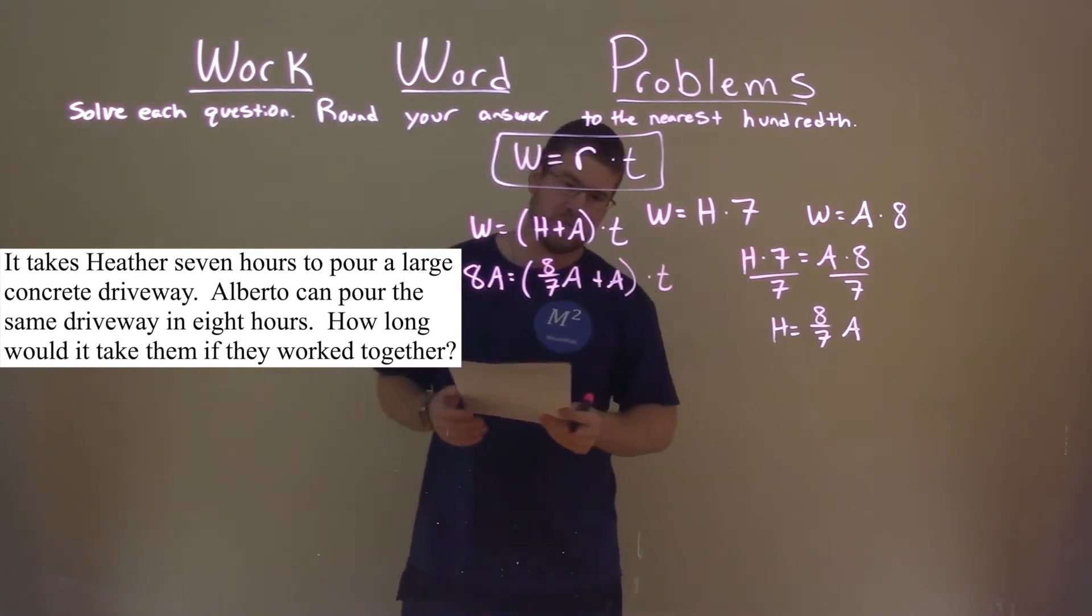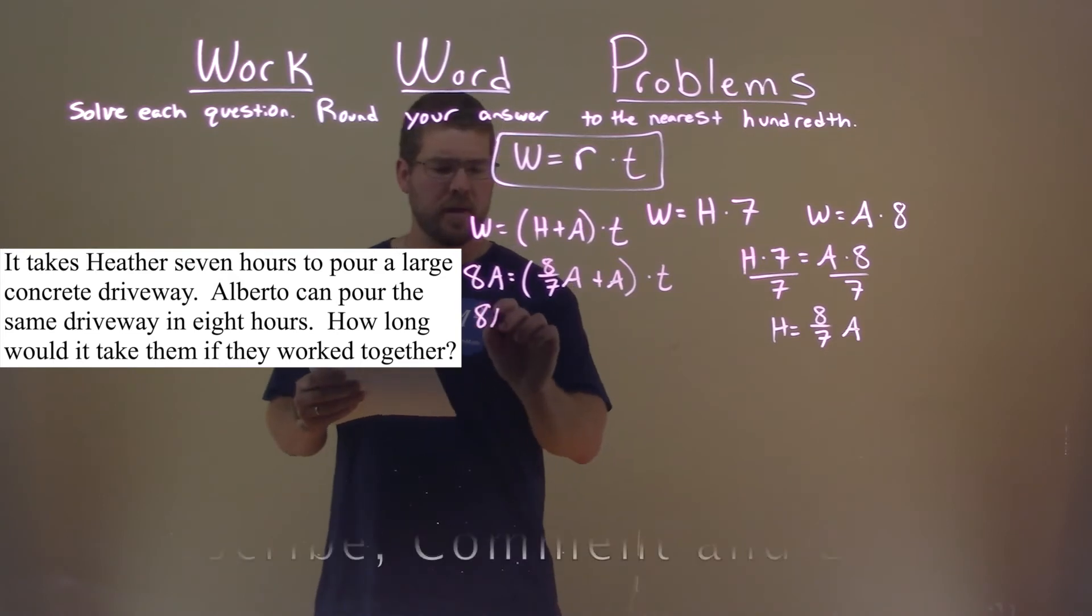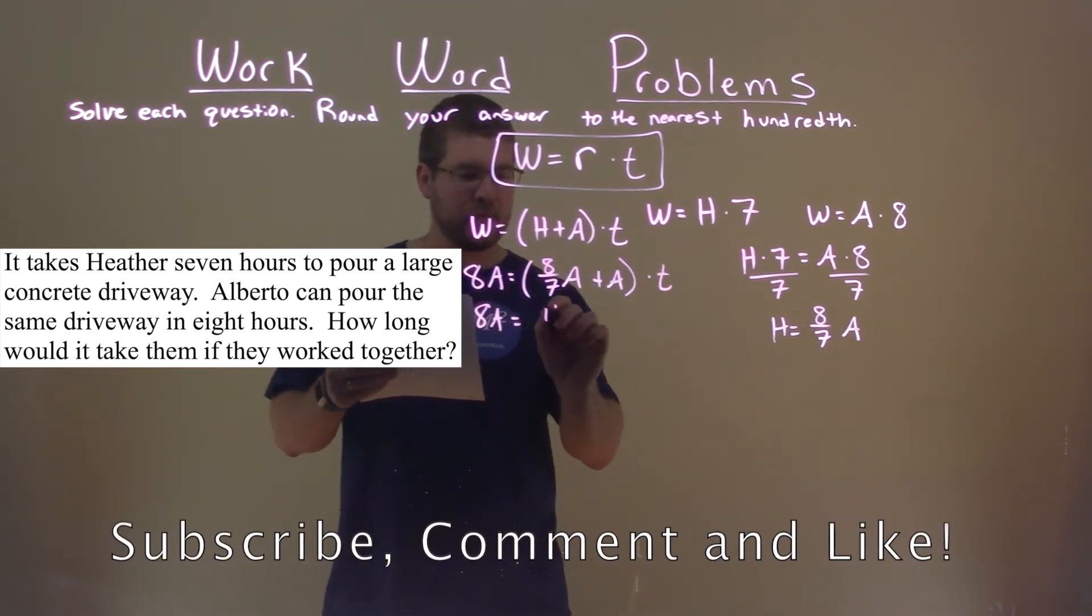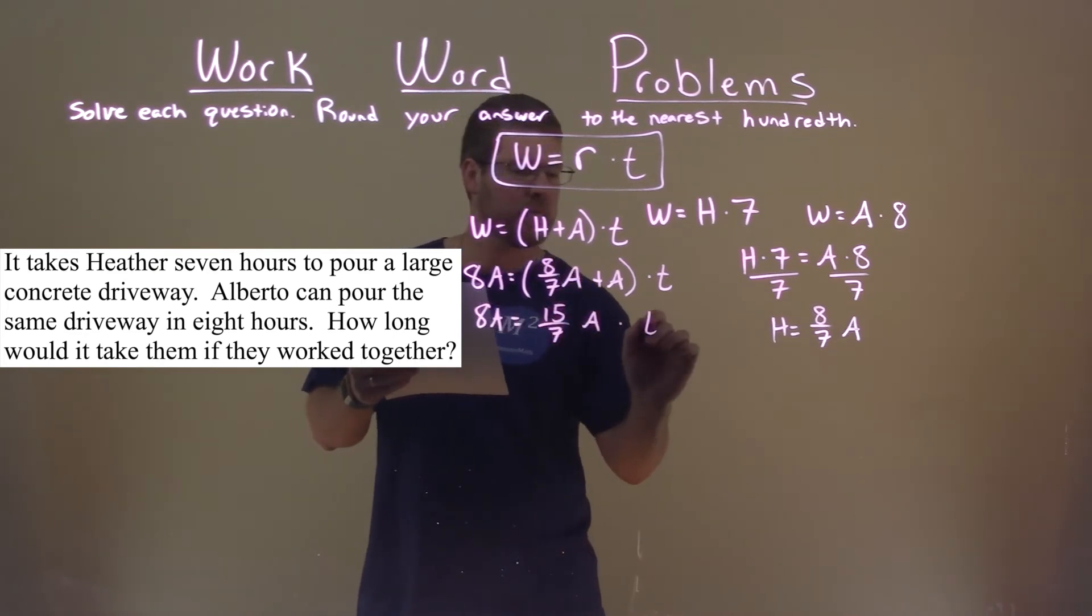So now we're going to solve for T, time. Bring this down, 8A, and then eight-sevenths A plus 1A is fifteen-sevenths A, and now we're still multiplying that by time.